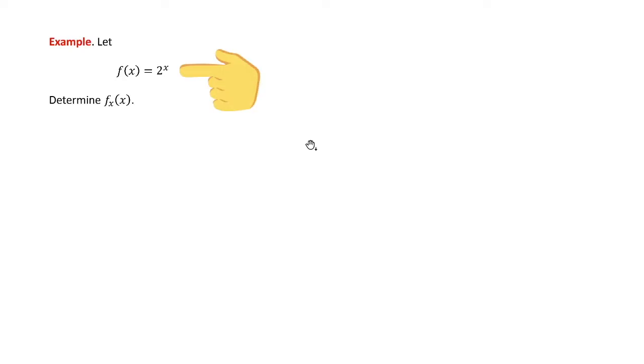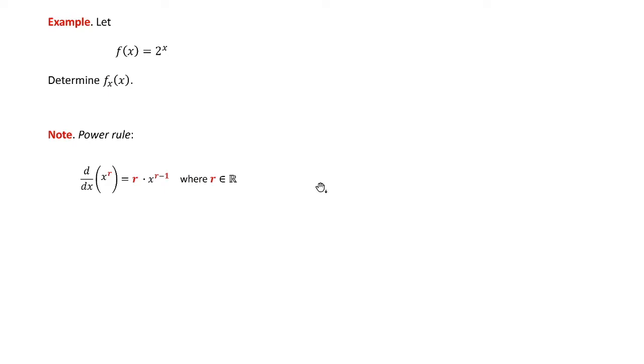This is the first basic problem, but they'll all work the same way. We want to determine the derivative. Now the typical mistake here - when we use the power rule, notice the variable is down here, the base, and the power has to be a constant. This is not what we have here.